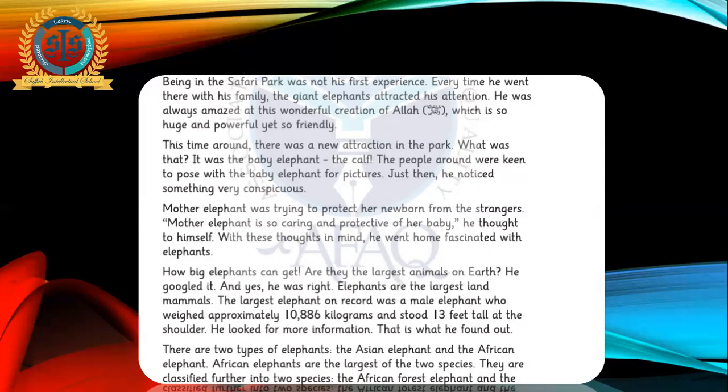Now you have to underline in this paragraph: conspicuous, which is a new word for you, and to pose as well. Mother elephant was trying to protect her newborn from the strangers. Mother elephant is so caring and protective for her baby, he thought to himself. With these thoughts in mind, he went home fascinated with elephants. In this paragraph, you have to underline protective and fascinated.